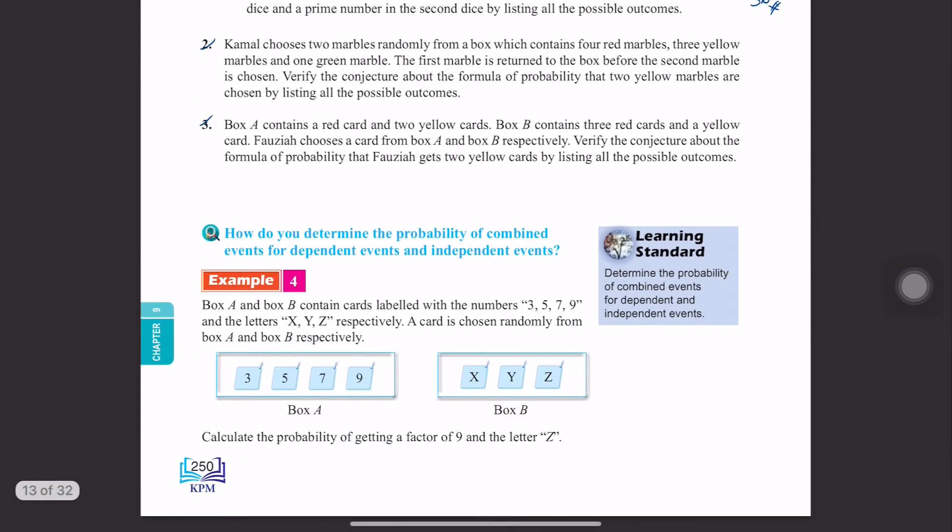Okay, next learning standard. Determine the probability of combined events for dependent and independent events. So let's look over here. How do you determine the probability of combined events for dependent and independent events?